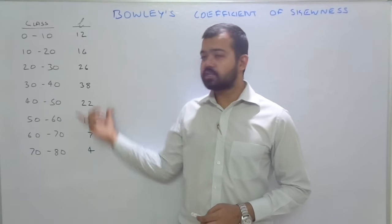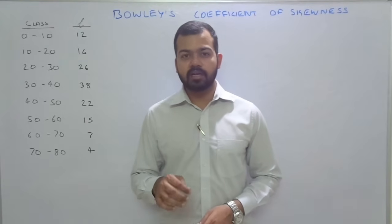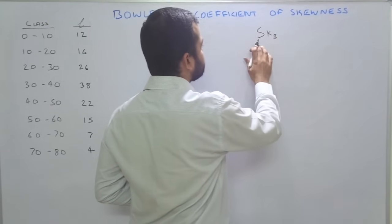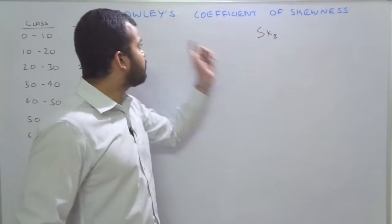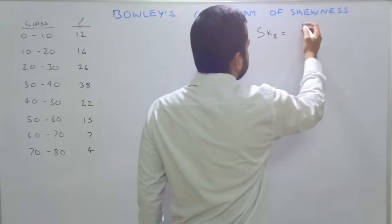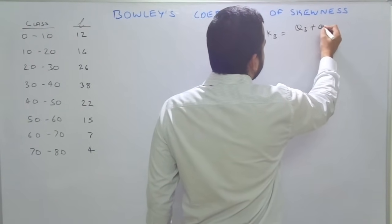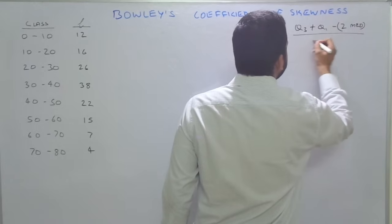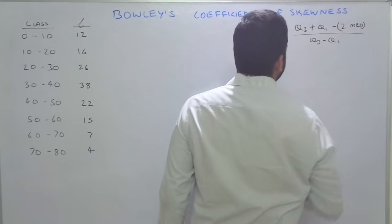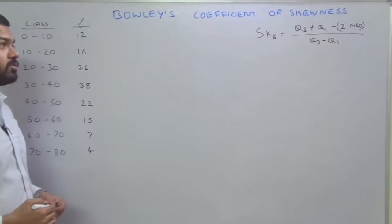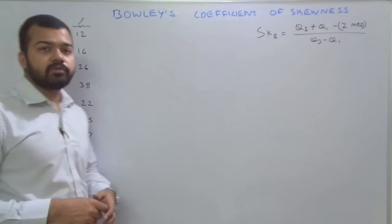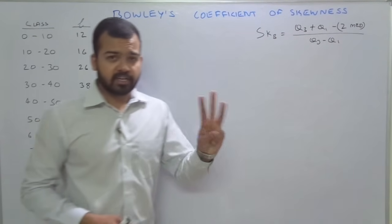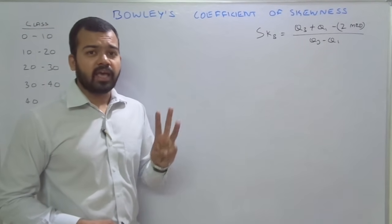This is a continuous series with frequency given. The first step, as usual, we will write the formula. The formula for Bowler's skewness — Sk(B) — is: Q3 plus Q1 minus 2 median, divided by Q3 minus Q1. This is the formula to calculate the coefficient of skewness. The formula demands three items: Q1, Q3, and the value of median.